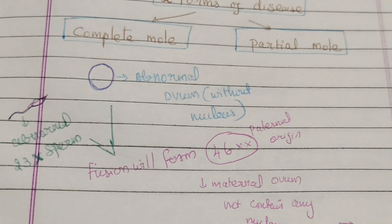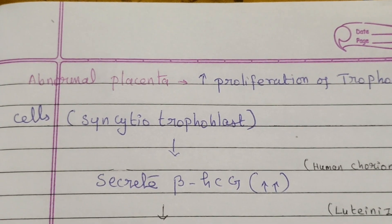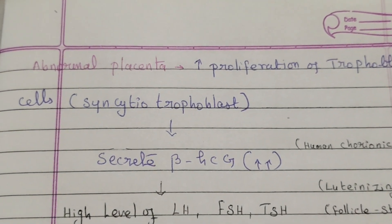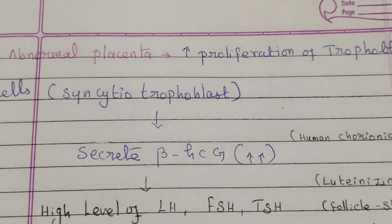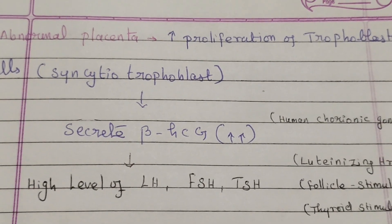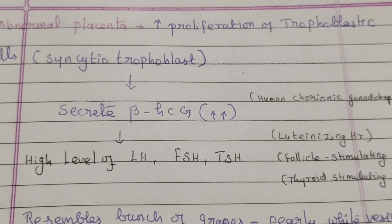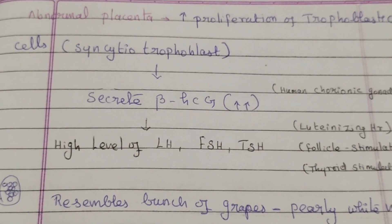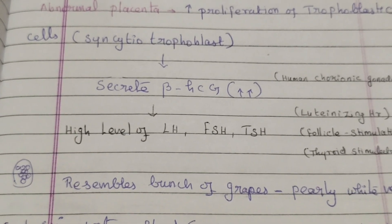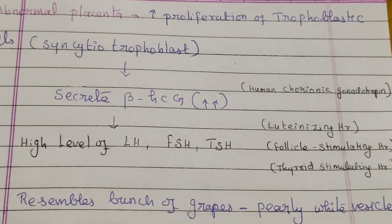Due to this abnormal fertilization, the placenta formed is also abnormal. There is increased proliferation of trophoblastic cells, mainly syncytiotrophoblasts. These syncytiotrophoblasts secrete beta-HCG, resulting in very high levels of beta-HCG. There will also be high levels of LH, FSH, and TSH.